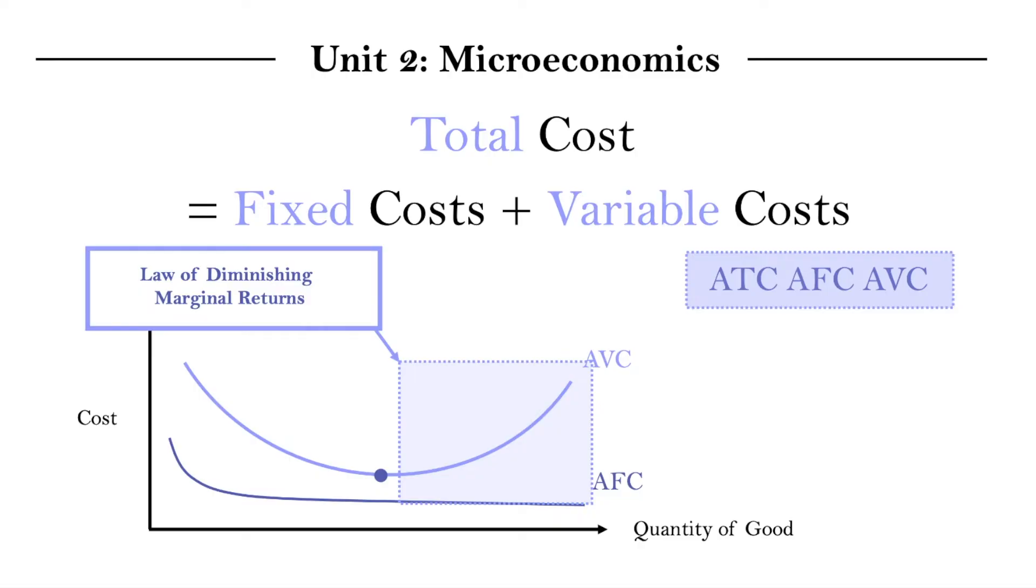And basically, the idea is that as we increase input and our productivity increases, output grows faster than input, we see a decrease in average variable cost. Then we reach some optimal point with the lowest average variable cost. And then an additional input actually starts to result in a proportionally lower increase in output. And then our average variable cost actually starts to increase.